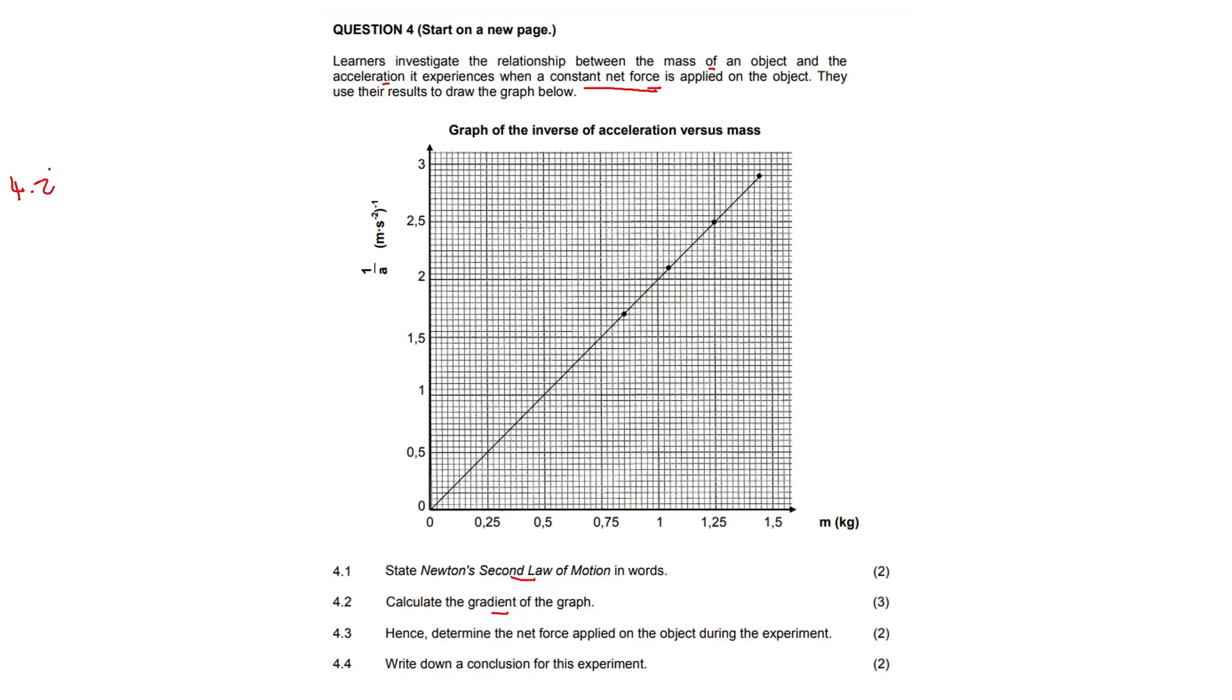Remember we can use any two points on the graph to calculate the gradient because it's going to be y2 minus y1 over x2 minus x1. Okay, let's use two solid ones, right?